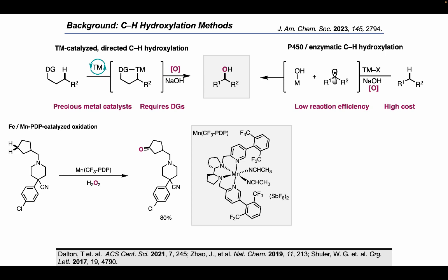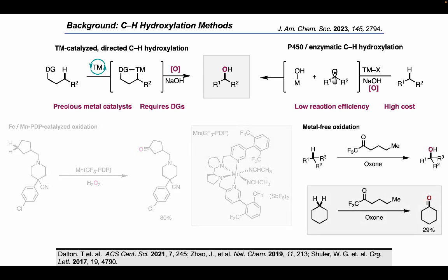Enzymatic methods, such as using P450 enzymes, offer good selectivity for the alcohol and are site- and enantioselective, but usually suffer from a limited substrate scope or require directed evolution for specific substrates. Metal- and enzyme-free hydroxylation methods have also been reported, but are limited in scope and result in over-oxidation of primary and secondary sites. Thus, a metal- and enzyme-free method to hydroxylate alkanes is highly desired.